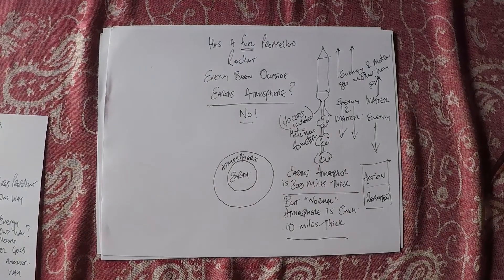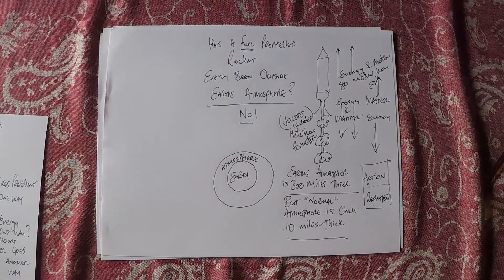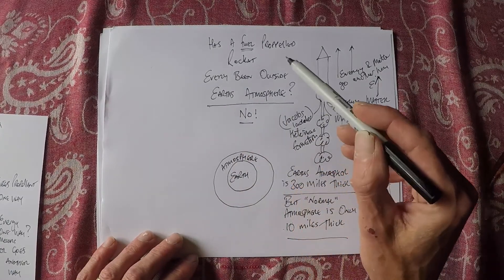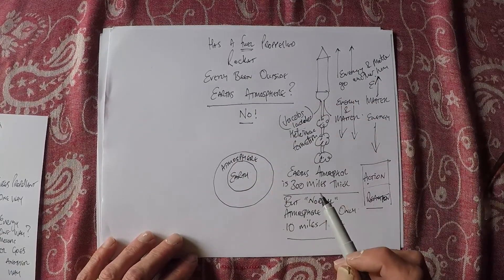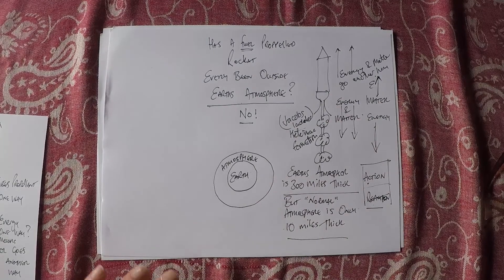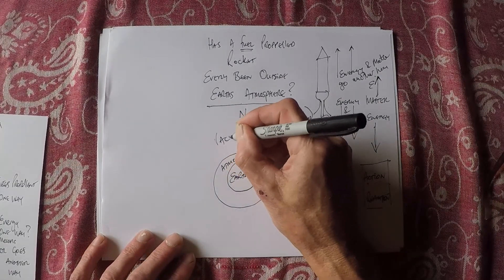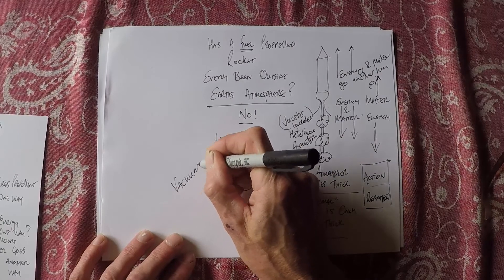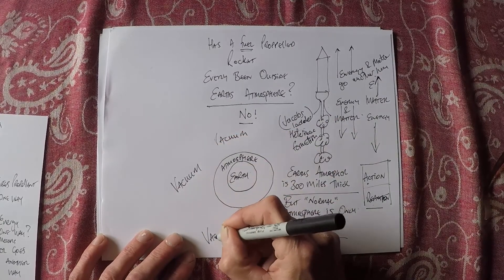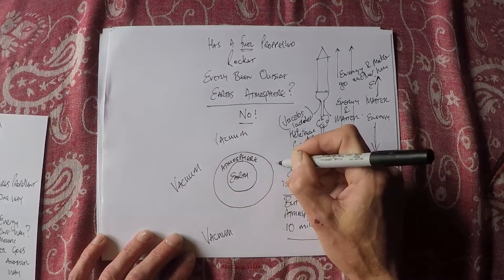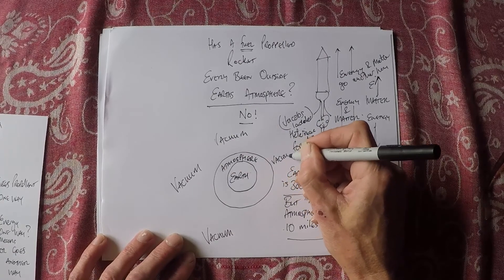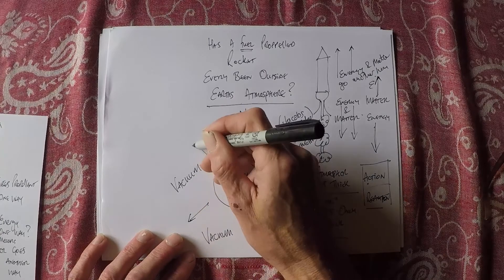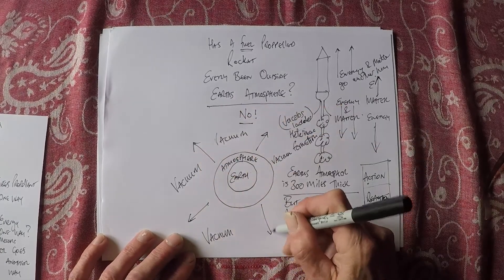All right, back to the Earth. Why has a fuel propelled rocket never been outside Earth's atmosphere? Well here's the reason, it's very very simple and anybody with half an education should know why. Outside the Earth is a vacuum.